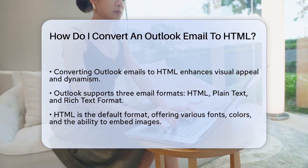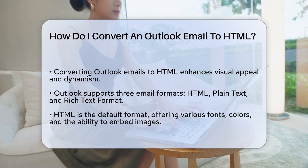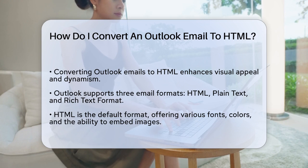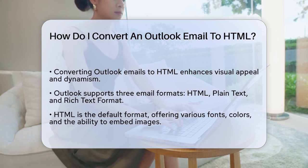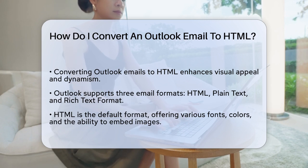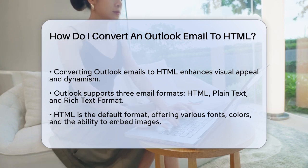First, you need to understand the different email formats Outlook supports: HTML, plain text, and rich text format. HTML is the default and most versatile, allowing you to use various fonts, colors, bulleted and numbered lists, and even embed pictures directly into the message.